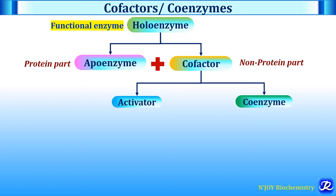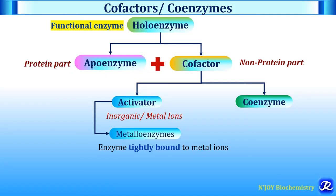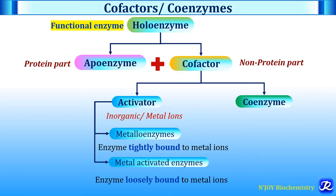Now, this cofactor, if it is inorganic or a metal ion, it is called as an activator. If the metal ion is tightly bound to the enzyme, it is called as a metalloenzyme. If the enzyme is loosely bound to the metal ion, it is called as a metal-activated enzyme. If the cofactor is an organic compound attached to the apoenzyme, it is called as a coenzyme.